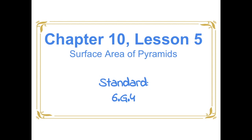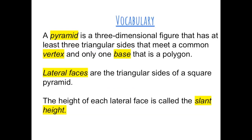Chapter 10, Lesson 5: Surface Area of Pyramids. A pyramid is a three-dimensional figure that has at least three triangular sides that meet at a common vertex, and only one base that is a polygon. Lateral faces are the triangular sides of a square pyramid. The height of each lateral face is called the slant height.